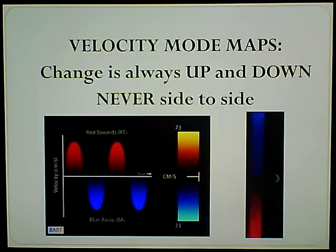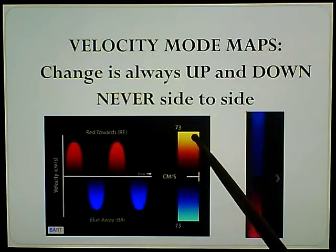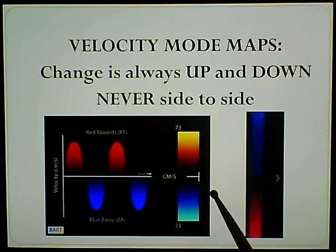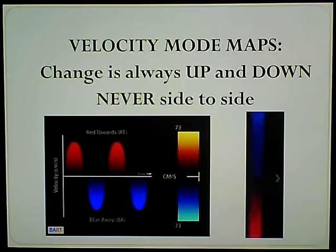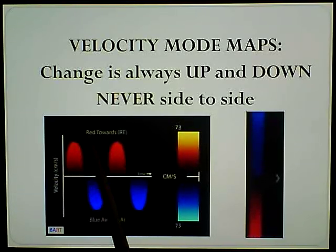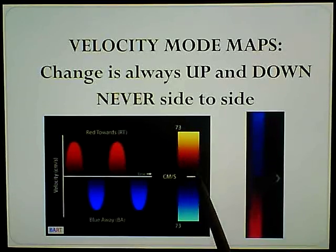We talked about the type of maps they are. The change is always up and down - it is never side to side. So if you notice, the color changes from the black line up to the black line down. Never side to side. And we're going to learn that map in a minute. Everything towards the transducer is above the line.